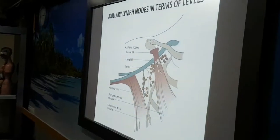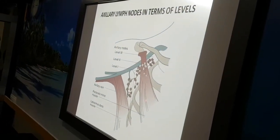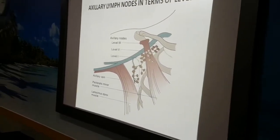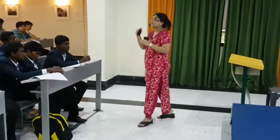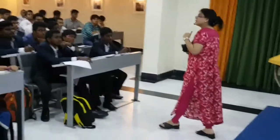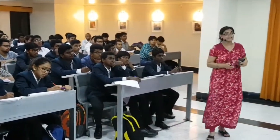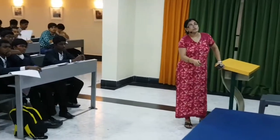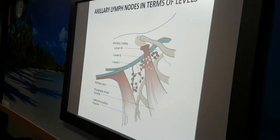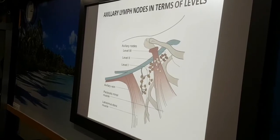Now the axillary lymph nodes in terms of level. The pectoralis minor muscle is also called the key muscle, because the axillary lymph nodes are divided into levels based on their correlation with the pectoralis minor muscle. The lymph nodes lying just below the pectoralis minor muscle are called level 1.